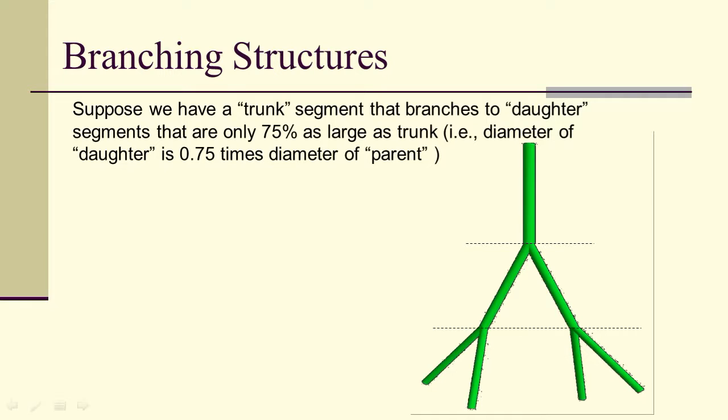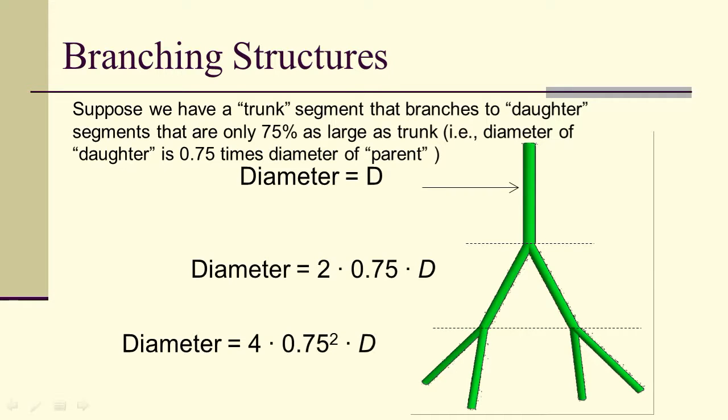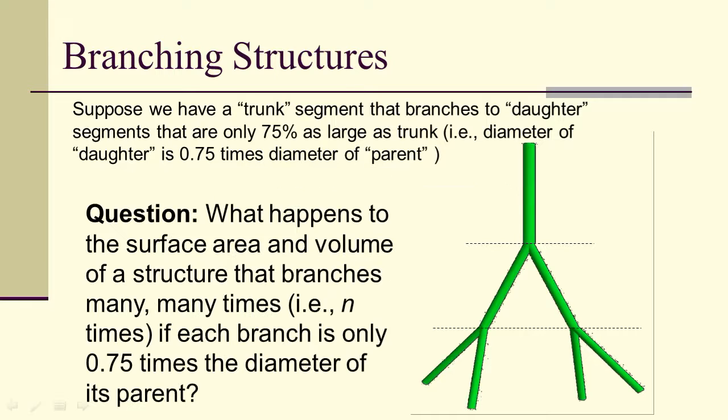Branching structures: we could have a trunk that branches to a daughter. The daughter segments can't be as large as the trunk. But maybe they're 75% as large as the trunk as we have here, and there's two of them. What does that mean? That means that the diameters are going to zero. But if you take the total diameters, they're becoming infinite. Because 0.75, 0.75, but 2 times 0.75 is 1.5. So you have this increase.